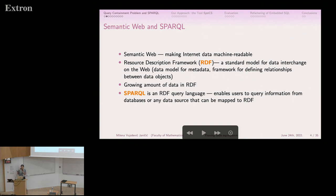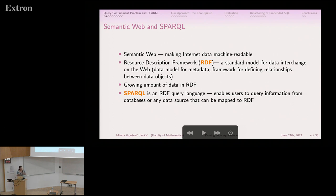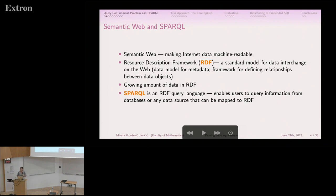SPARQL is a relatively new programming language for the semantic web. The main idea of the semantic web is making internet data machine-readable so that machines can extract information from data. The most important component is the Resource Description Framework (RDF), which provides a framework for defining relationships between data objects — a data model for metadata that should be readable by machines. There is a growing amount of data in RDF, and SPARQL is the query language for this framework.